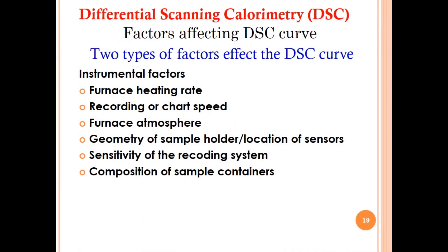Various factors affect the DSC curve, falling into two types. Instrumental factors include: furnace heating rate, recording or chart speed, furnace atmosphere, geometry of the sample holder, location of sensors, sensitivity of the recording system, and composition of sample containers.